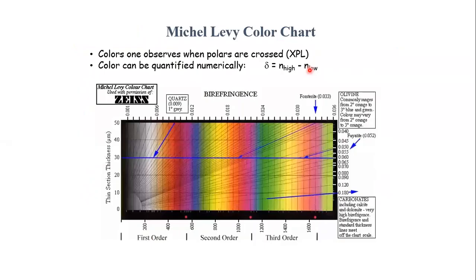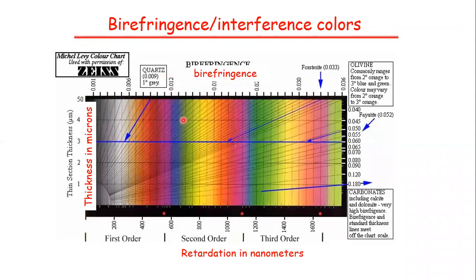The Michel-Lévy color chart is an interference color chart developed by a scientist named Michel-Lévy. This color chart is used for the identification of minerals in thin section on the basis of interference color. Interference colors of minerals are divided into orders based on retardation. At the base of the color chart, orders are written: first order, second order, and third order. This classification of orders is based on retardation — if retardation is greater, the order will be higher; if retardation is smaller, the order will be lower.